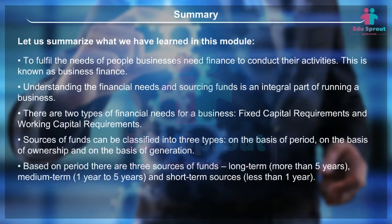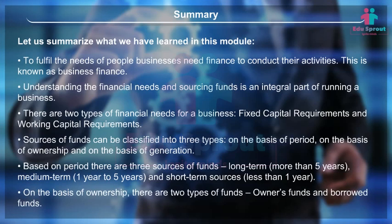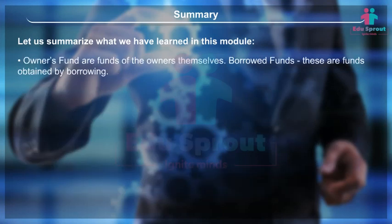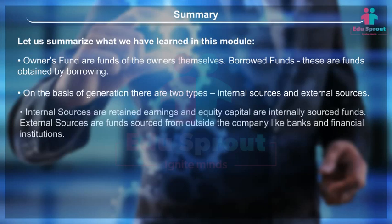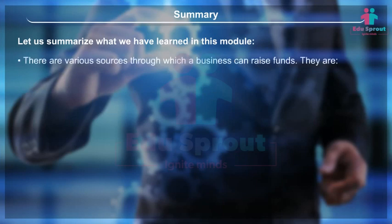Sources of funds can be classified based on period: long-term (more than 5 years), medium-term (1 to 5 years), and short-term (less than 1 year). On the basis of ownership, there are two types — owner's funds and borrowed funds. On the basis of generation, there are two types — internal sources (retained earnings and equity capital) and external sources (funds sourced from outside the company, like banks and financial institutions). There are various sources through which a business can raise funds: retained earnings, trade credit, factoring, lease financing, public deposits, commercial paper, issue of shares, debentures, commercial banks, and financial institutions.